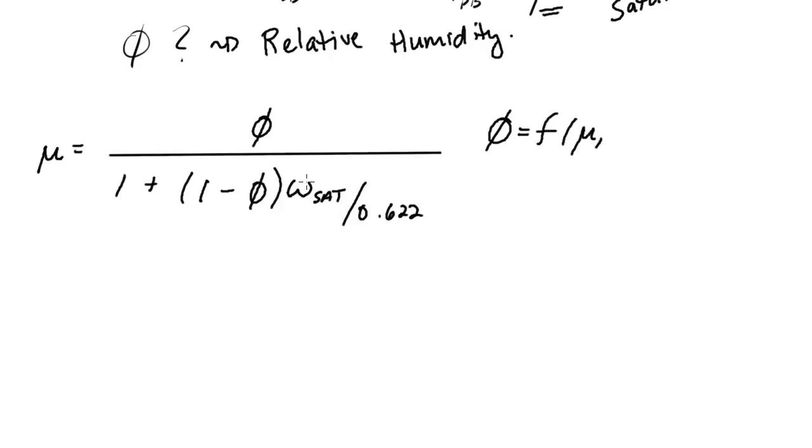What we want is a relationship for relative humidity as a function of mu. Actually, we're going to use something different than the saturation humidity ratio. We actually want to know or use the partial pressure, the pressure of the vapor at saturation, along with the total pressure. Because we already always know that and that's an easy thing to come by.